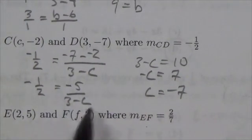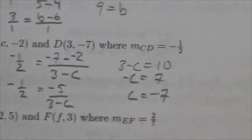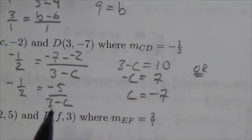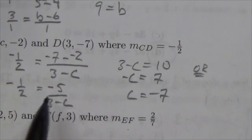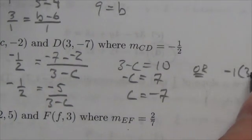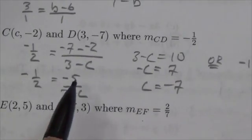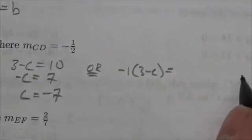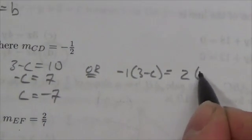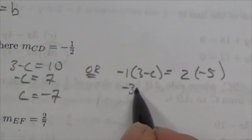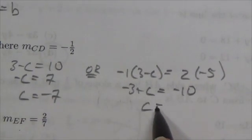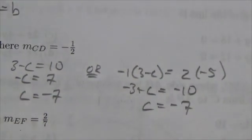Now if you don't like that method, once you're here another thing you could do is cross multiply. I know not everybody likes to hear those words cross multiply, but it'll be negative 1 times 3 minus c because this is a proportion here has to be equal to the product of this denominator and this numerator. So that would have to be equal to 2 times negative 5. This becomes negative 3 plus c is equal to negative 10, and then add the 3 to both sides, c equals negative 7. Either way you get the same result.